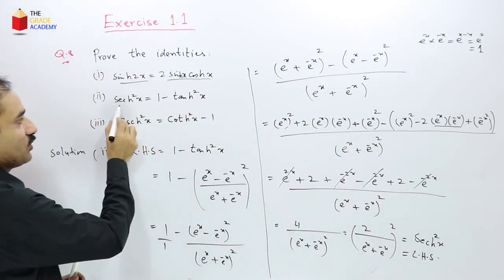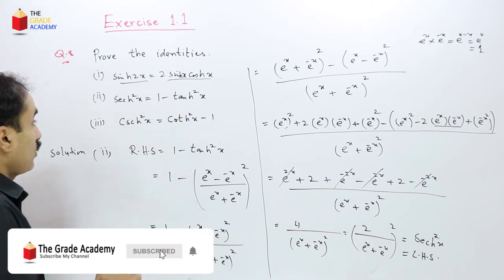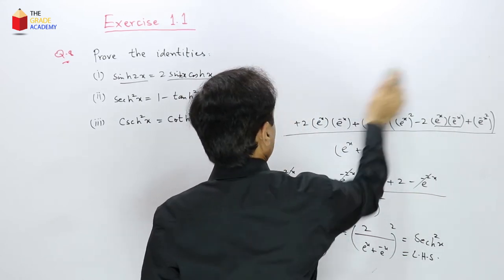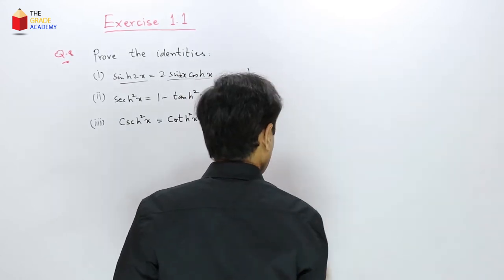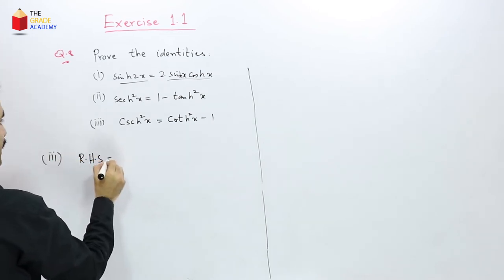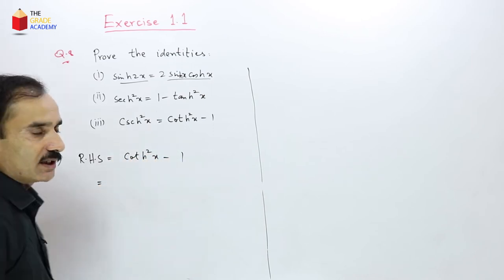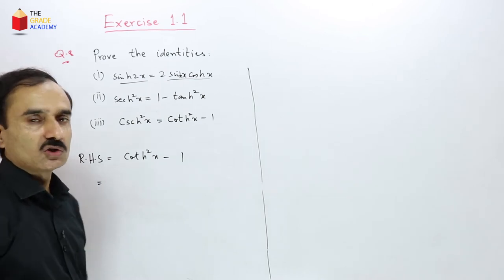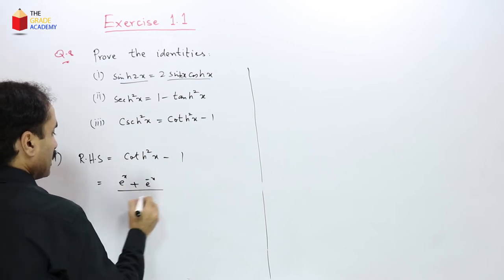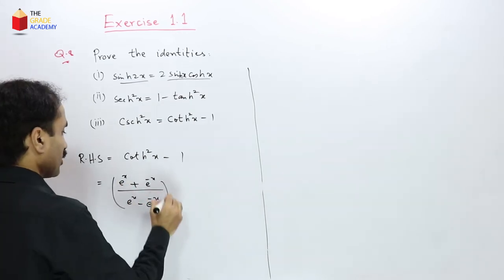So 1 − tanh²(x) = sech²(x). That completes the second identity. For the third identity, we take the right-hand side: coth²(x) − 1. Since coth is the reciprocal of tanh, it equals cosh/sinh = (eˣ + e⁻ˣ)/(eˣ − e⁻ˣ).